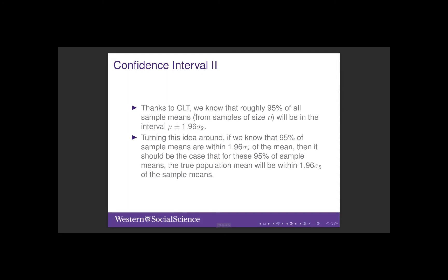Turning the idea around, if we know that 95% of sample means lie in this region, then it should be the case that for 95% of sample means, the true population value will be within 1.96 standard errors of the sample mean.